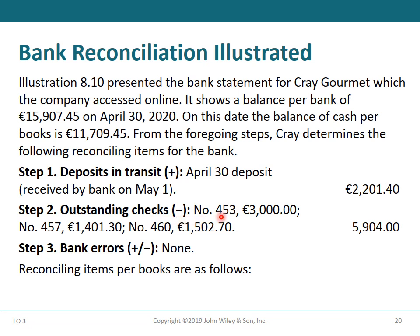Step 2 — Outstanding checks: Check #453 for $3,000; Check #457 for $1,401.30; Check #460 for $1,502.70. These outstanding checks are recorded in the books but not yet in the bank statement, so they should be deducted from the bank statement balance.